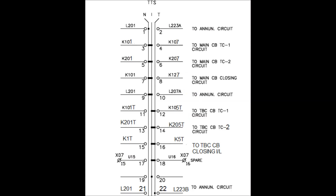The contact distribution for the NIT switch has been shown in this figure. For Normal position, contacts one and two are taken for the annunciation circuit. For Normal-Inter position, contacts three and four are taken for the main CB TC1 circuit. Contacts five and six for Normal-Inter position are taken for the main CB TC2 circuit, and seven and eight for Normal-Inter position are taken for the main CB closing interlock circuit. Contacts nine and ten are taken for the annunciation circuit.